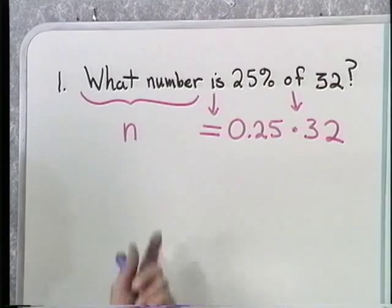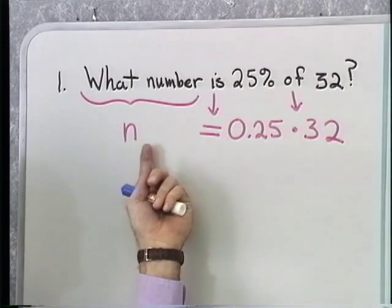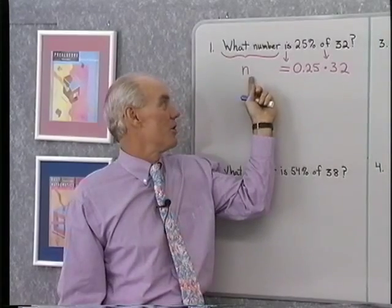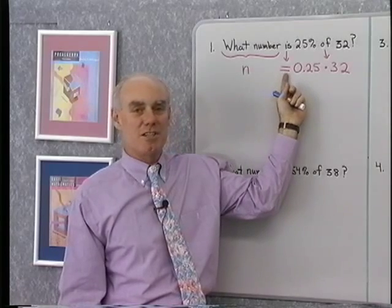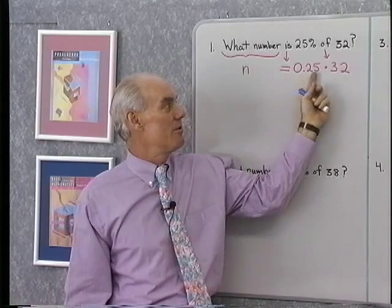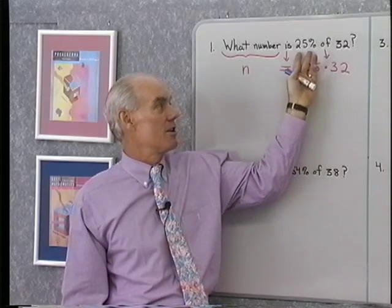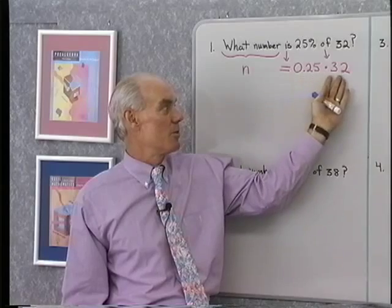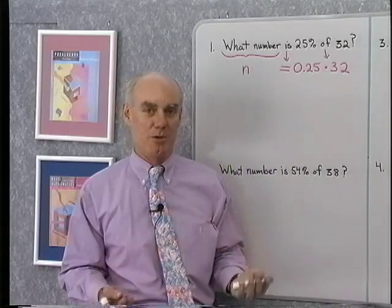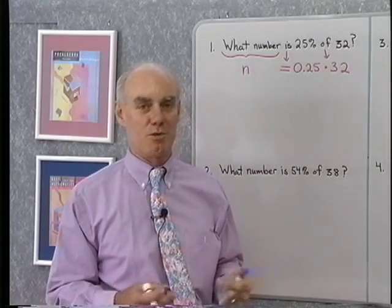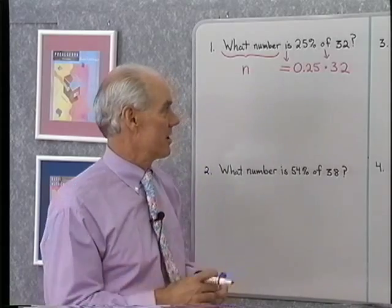The translation is really pretty simple. It's very direct. What number, that stands for n. I have n, is translates into equal, 0.25, of is times and then 32. Now, the reason I write 0.25 here instead of 25% is that I'm going to be doing some arithmetic and I need to be able to work with a decimal. I can't do arithmetic with percents.